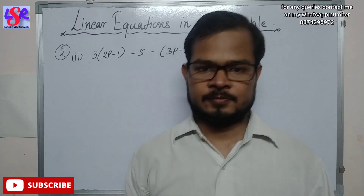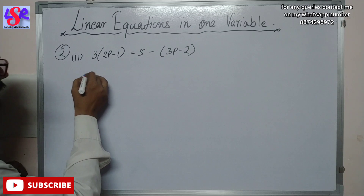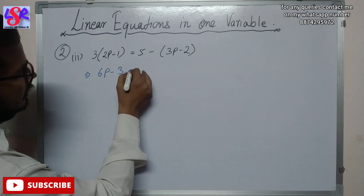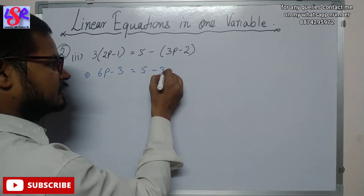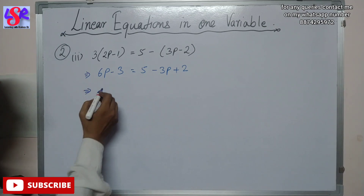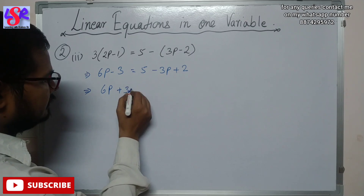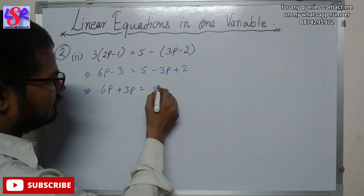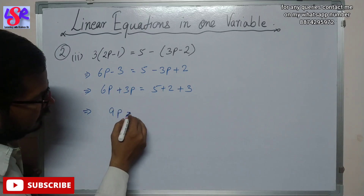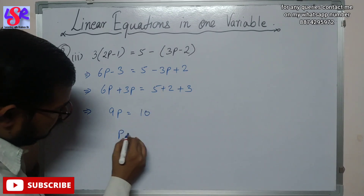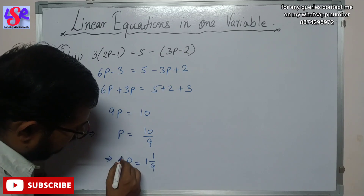Now let's do question number 2, second part. Here we have 3 into 2p minus 1 equals to 5 minus 3p minus 2. Opening brackets: 6p minus 3 equals to 5 minus 3p plus 2. Rearranging: 6p plus 3p equals to 5 plus 2 plus 3, giving 9p equals to 10. So p equals to 10 by 9, which is 1 whole 1 by 9 as answer.